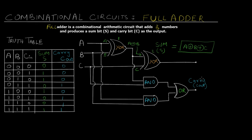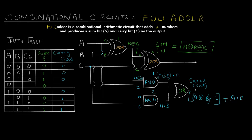Now let's see the expression for carry. For the first AND gate, one input comes directly from the output of XOR gate 1, which is A XOR B, and C is provided separately. So the output of the first AND gate is (A XOR B)·C. For the second AND gate, A and B are directly supplied as inputs — the curves are jumpers, meaning the circuit lines do not intersect — so the output is A·B. The outputs of AND gate one and two are finally ORed, giving the carry expression: (A XOR B)·C + A·B.